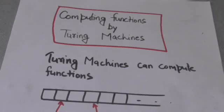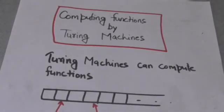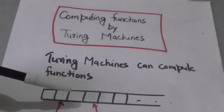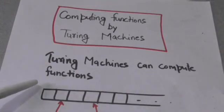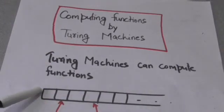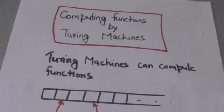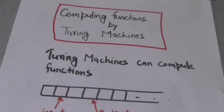Hello friends, welcome back. In this tutorial we will study how we can compute functions by Turing machines. Apart from accepting strings, Turing machines can also compute functions. The tape of a Turing machine acts as both an input device and an output device. The input of computation is all the non-blank symbols on the tape at the initial time, and the output is the string of tape symbols on the tape when the Turing machine halts.